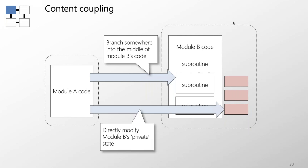More likely in practice: content coupling occurs when one module can directly modify another module's private state information. In C++ and Java, getter and setter methods indirectly expose private state and could be argued to be a form of content coupling. An even more extreme example is a module modifying another module's source code at runtime — reportedly done on the Space Shuttle flight control software, but not recommended in commercial code.